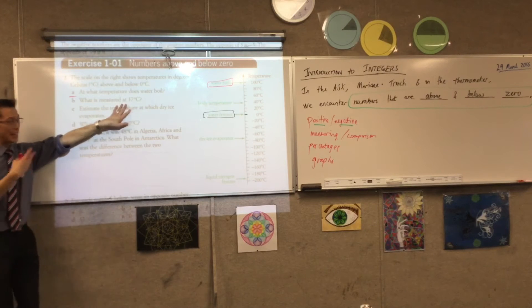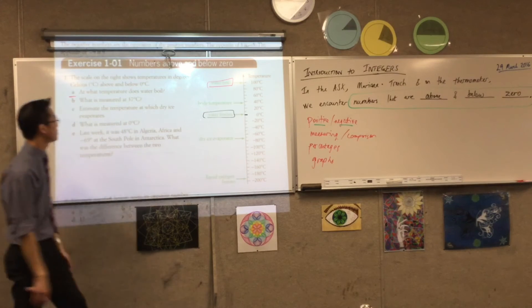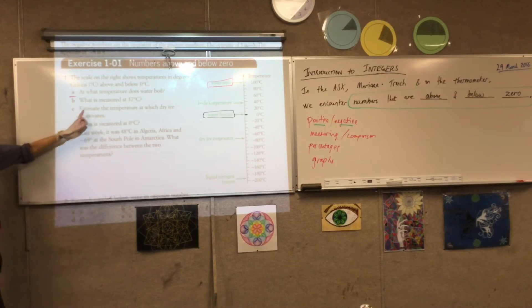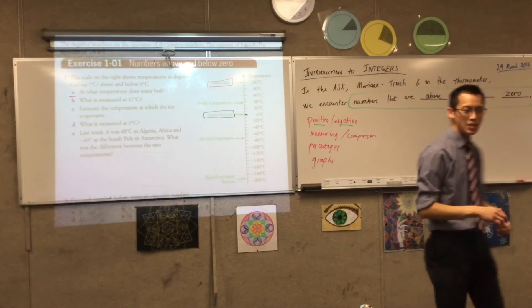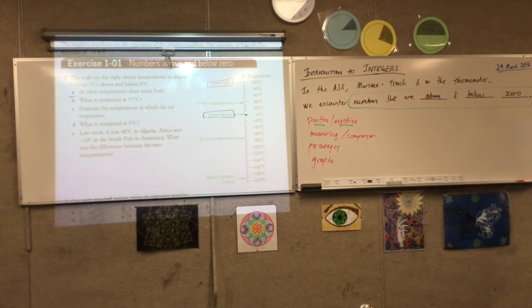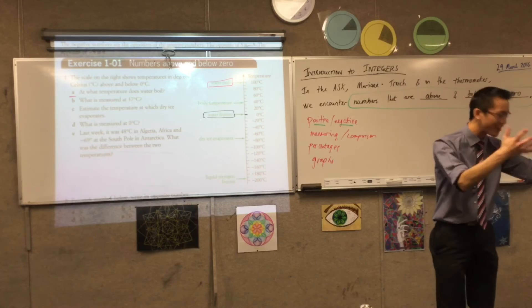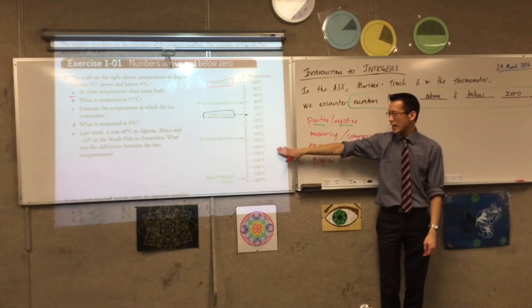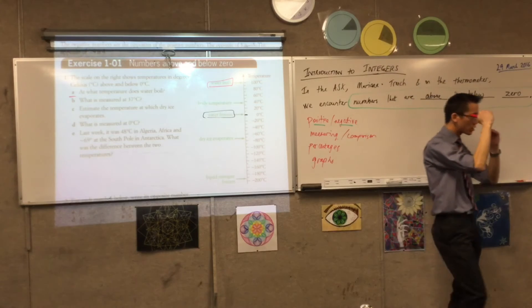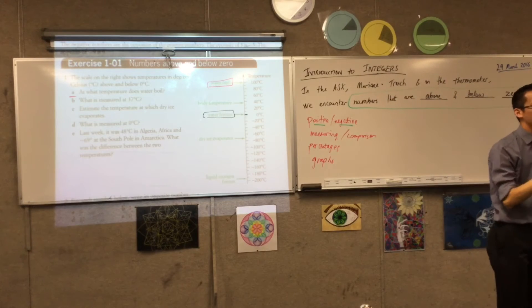So, part B, I'm reading off, that's body temperature. Estimate the temperature, and it says estimate because we're trying to read as accurately as we can. At which dry ice evaporates. Who's seen dry ice before? Like, that stuff is sort of small. Is it very good? Okay? Have a look. Look at the graph there. Way down here. What's it between? Have a look at the two marks it's between. Which two marks is it in between?